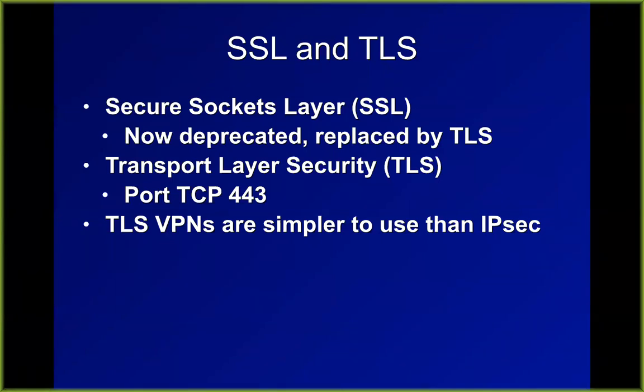TLS 1.2 is quite common now. The main advantage over earlier protocols is perfect forward secrecy. The NSA or the Department of Homeland Security is archiving all internet data in vast data storage units in Utah. Their plan is that if they eventually get the encryption key later, they can go back and decrypt historical data. That's possible with versions of TLS before 1.2 because it uses the same key over and over. TLS 1.2 uses a different key for every message to stop that attack.